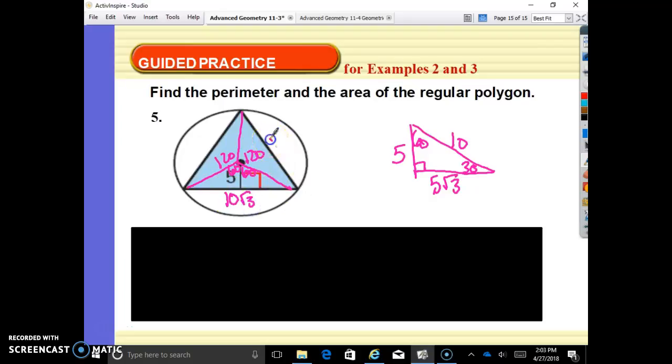So each of these bases are 10 root 3, making our perimeter 10 root 3 plus 10 root 3 plus 10 root 3, or 30 root 3. Our area is one half our apothem 5 times our perimeter of 30 root 3. 30 times 5 is 150, 150 divided by 2 is 75. So our area is 75 root 3.